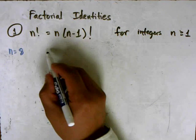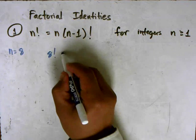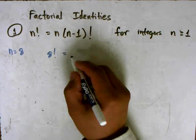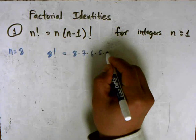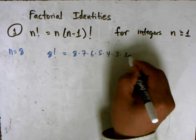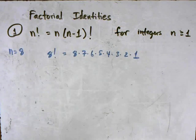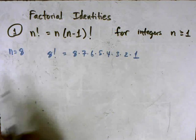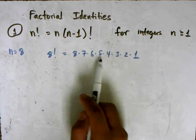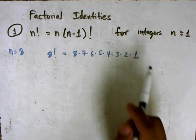So 8 factorial, by the very definition of factorial, is 8 times 7 times 6 times 5 times 4 times 3 times 2 times 1. So that's one way to look at it, is as 8 factorial. The expanded form is 8 times 7 times 6 times 5 times 4 times 3 times 2 times 1.